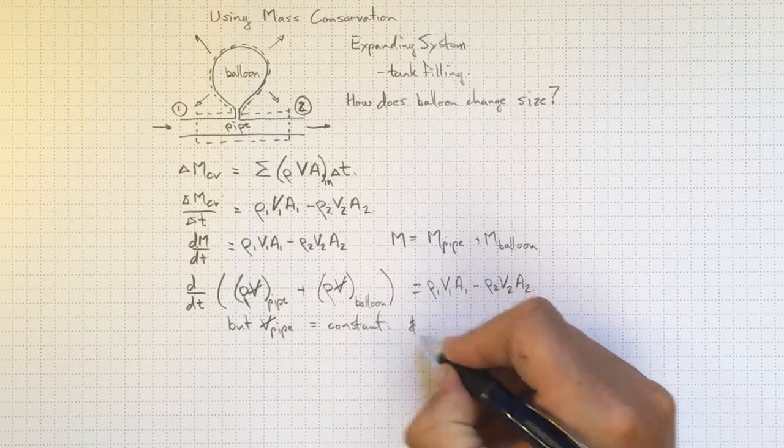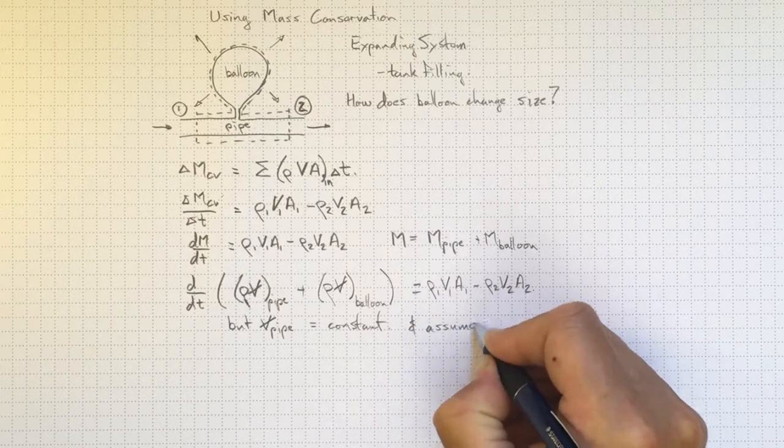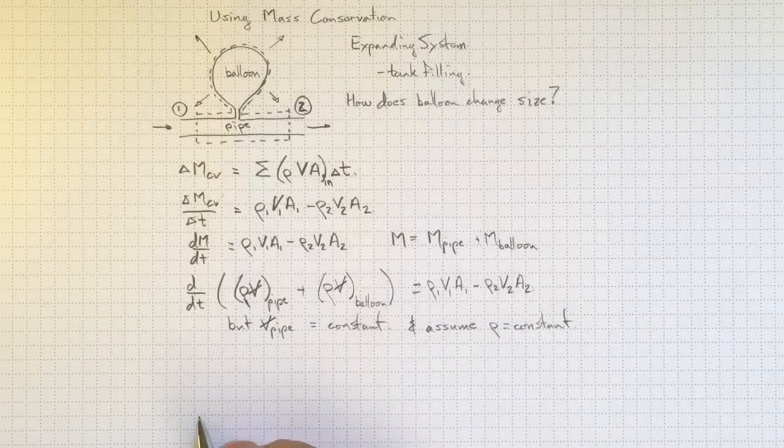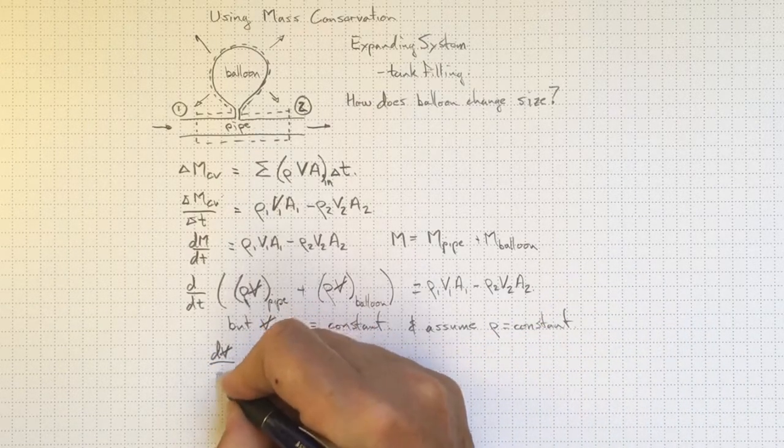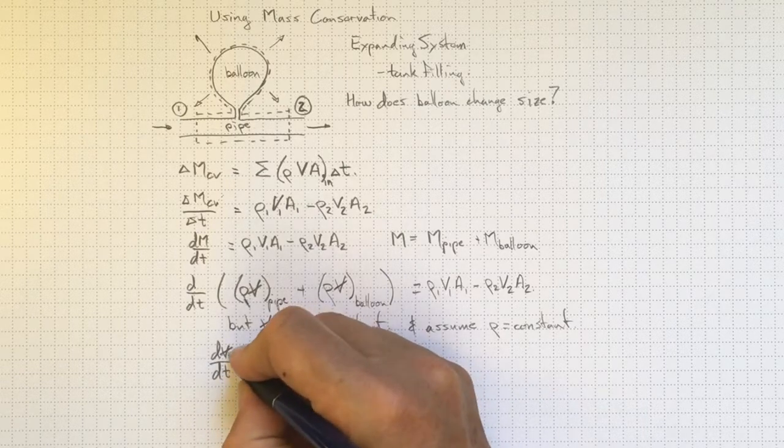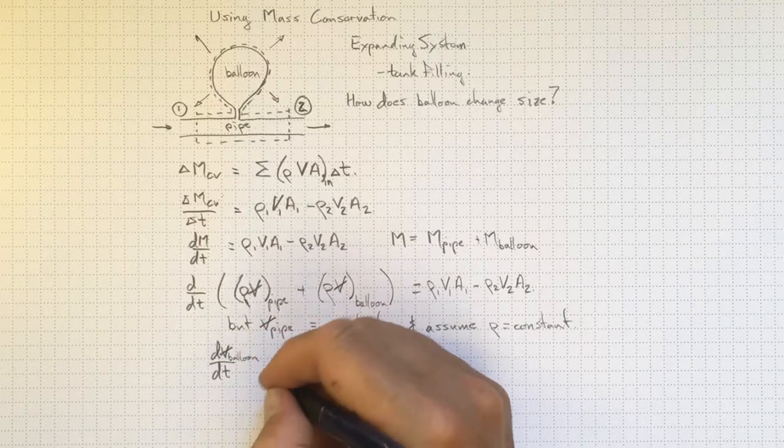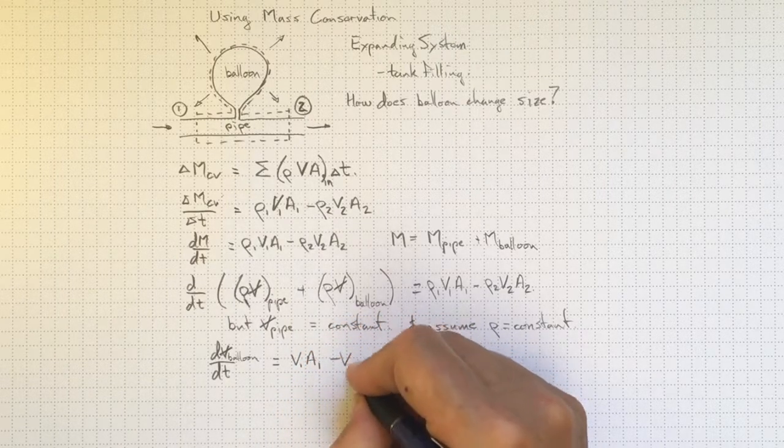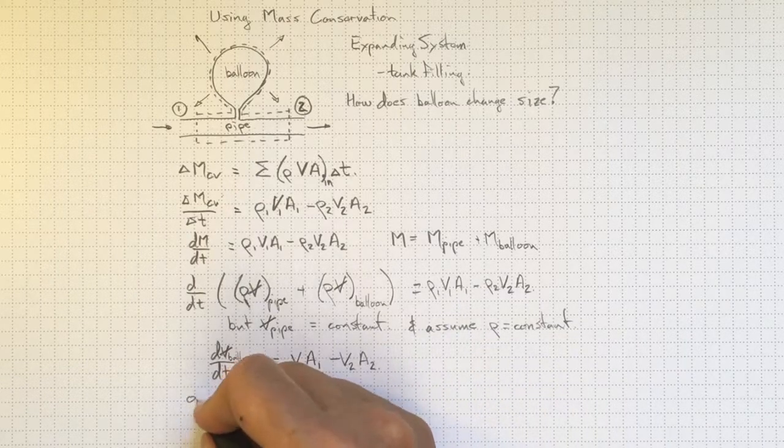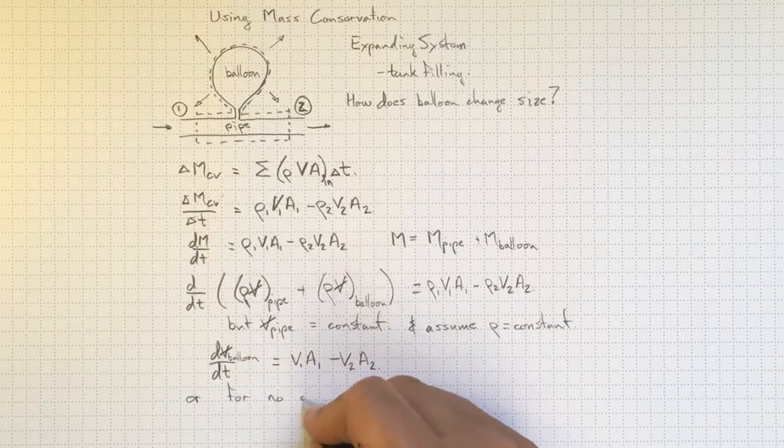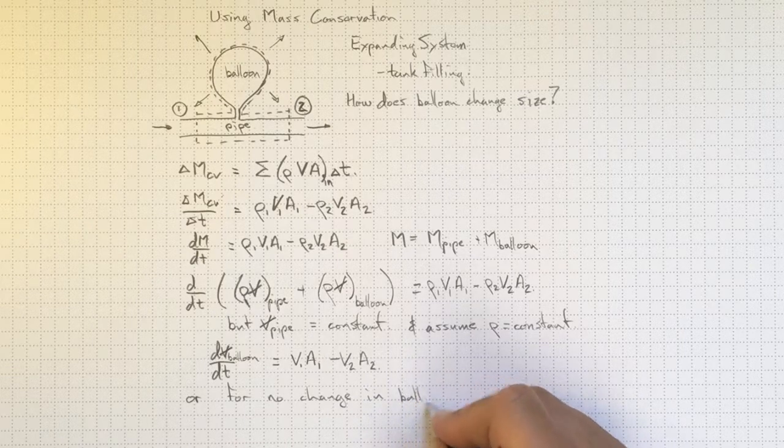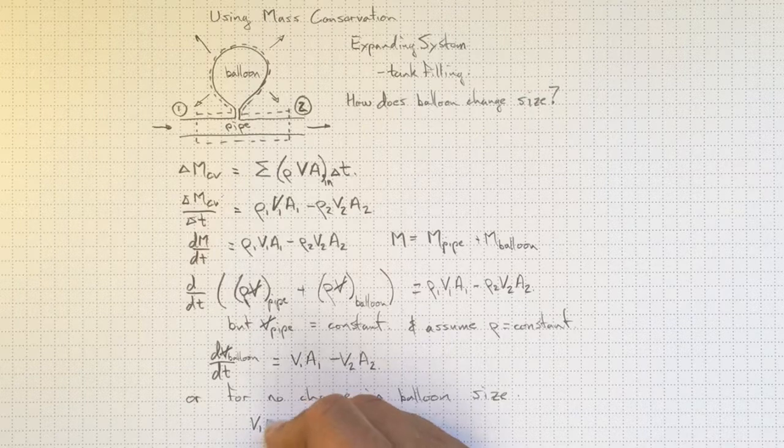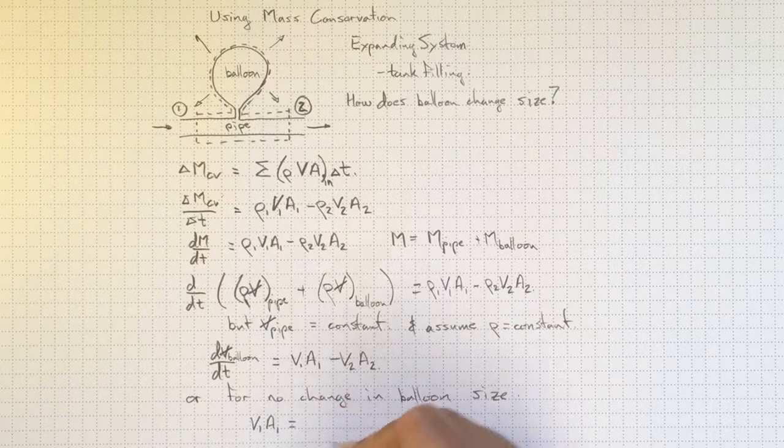And we'll assume density is constant, which is a pretty safe bet through most of this course. We'll wind up with the rate of change of volume with time for the balloon equal to V_1 A_1 minus V_2 A_2. Or for no change in the balloon dimensions, or no balloon at all, V_1 A_1 equal to V_2 A_2.